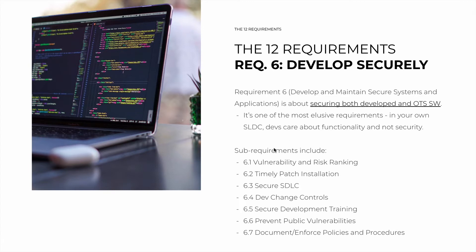We have seven sub-requirements this time. First, it's about doing regular vulnerability assessing and risk ranking, both for your applications and off-the-shelf ones. And the reason is sub-requirement 6.2, which is about timely patch installation. Once you rank the vulnerabilities, you'll want to install patches for the critical ones as soon as possible. And there's a different timing for critical patches and all other ones.